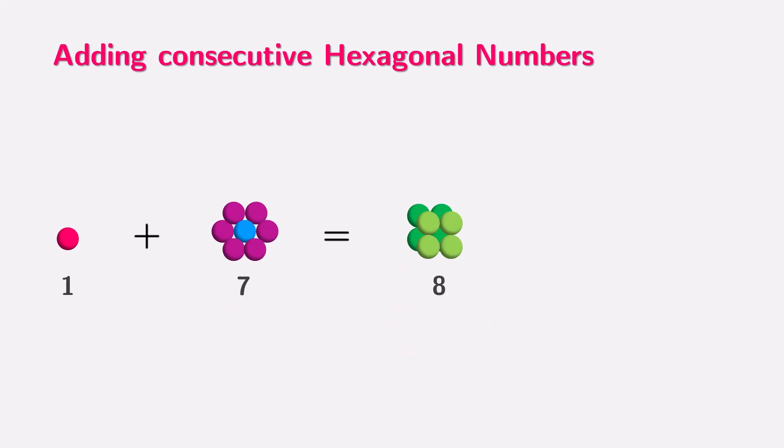For example, if we take the first hexagonal number, which is 1, and then add the next one, 7, we get 1 plus 7 equals 8, which is 2 times 2 times 2, or 2 cubed.